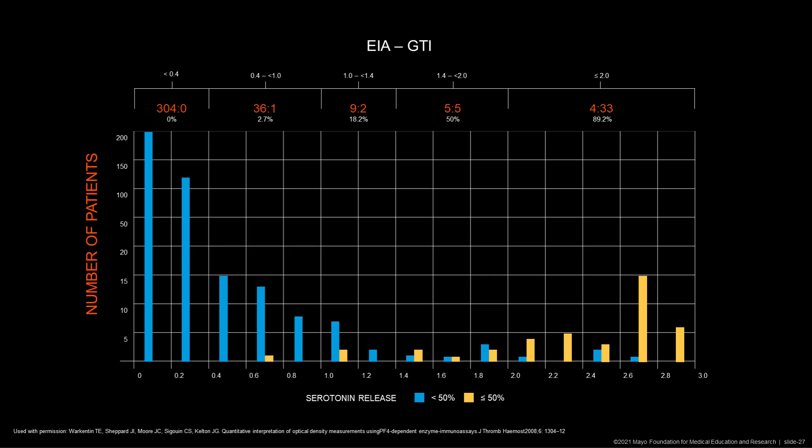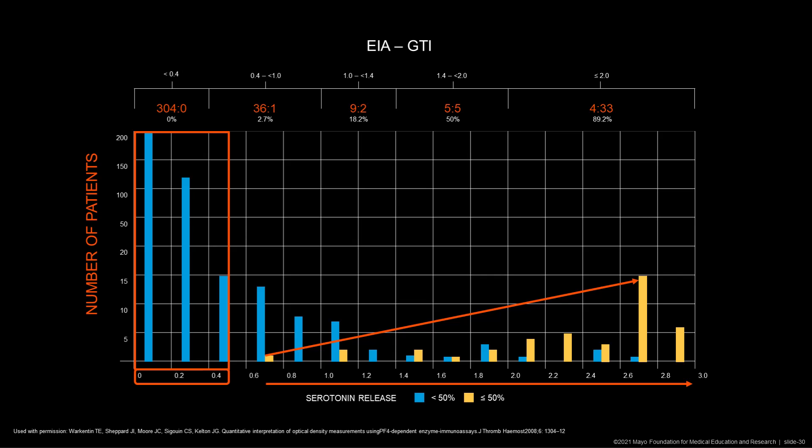The relationship between a positive immunoassay test result and a positive SRA is shown in this study. A positive cutoff is at an optical density of 0.4. All patients with an optical density of 0.4 or less were negative for the SRA assay. However, as the optical density increased, there was a higher proportion of patients with a positive SRA. Close to 90 percent of patients with an optical density greater than or equal to 2 had a positive SRA.